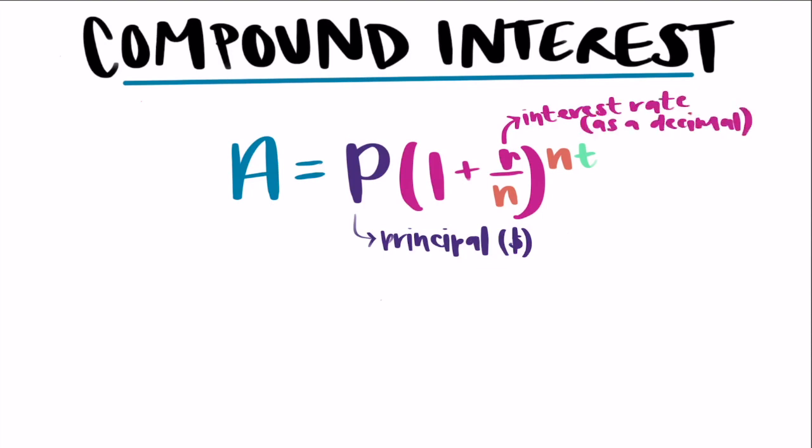Then we have our N in two different places. And that is going to stand for the number of times compounded in a year or whatever time period you're going off of. Typically, it's going to be times in a year. So how many times is it compounded in a year?